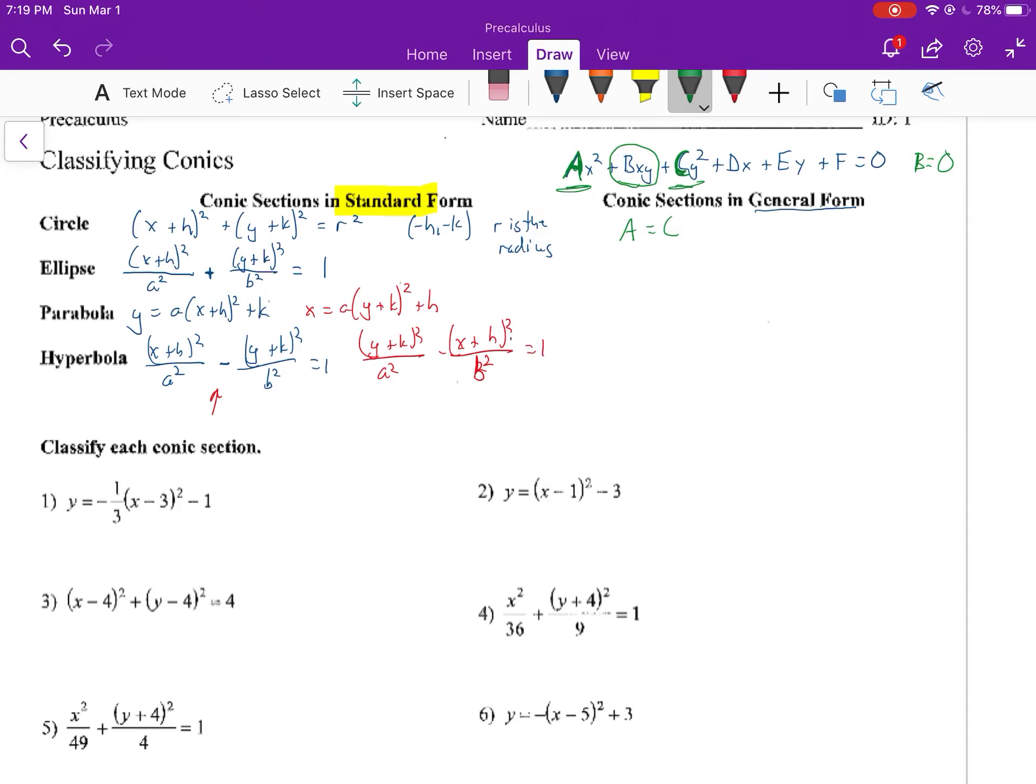For an ellipse, a and c are the same sign. And when I'm saying same sign, I'm referring to positive or negative. But they are not equal. Because if a and c were equal, then it would be a circle. So a and c are the same sign, so both positive or both negative, but they're not equal.